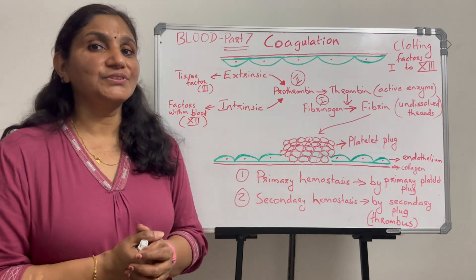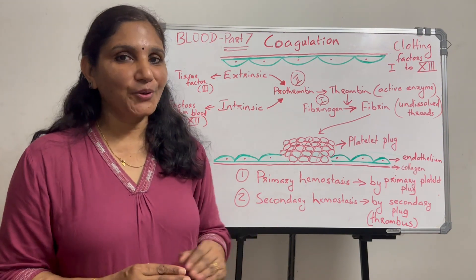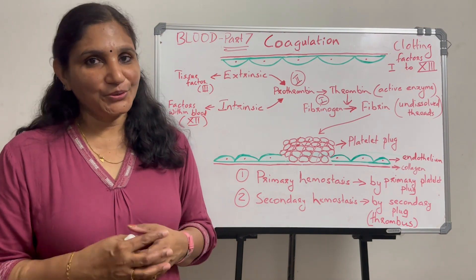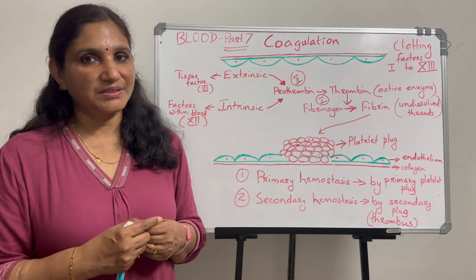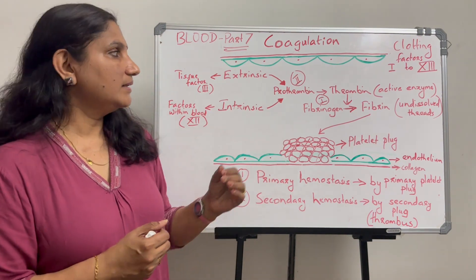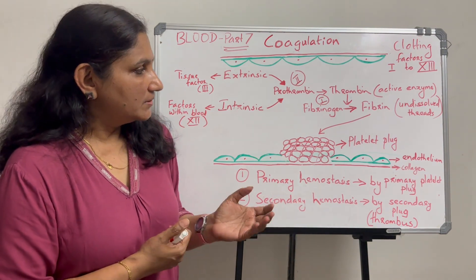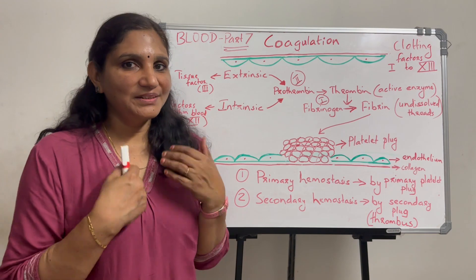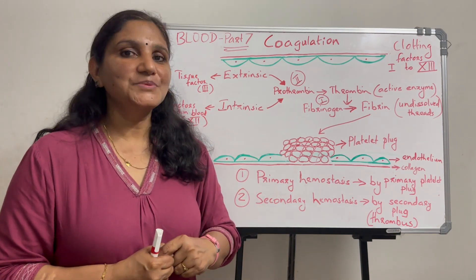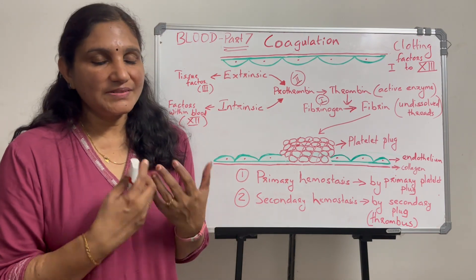Coagulation is only one part of hemostasis — it is the secondary hemostasis. The primary hemostasis is just temporary. This is why coagulation and the clotting factors are important as part of hemostasis. This is the first video — please subscribe to this channel, like, comment, and share your suggestions.